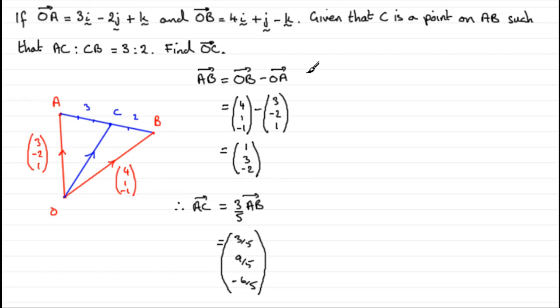Now that we've got AC, we can get OC because OC is going to be OA followed by AC. Let's just write that in as OA followed by AC. So we've got our vector OA, which we know is 3, minus 2, 1.